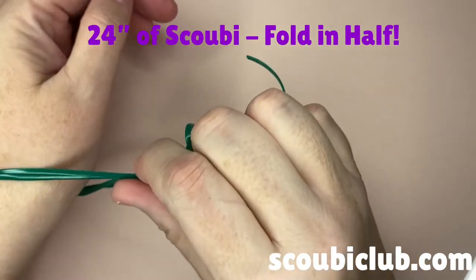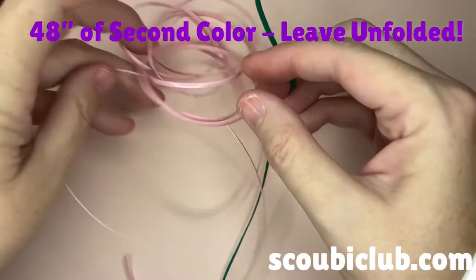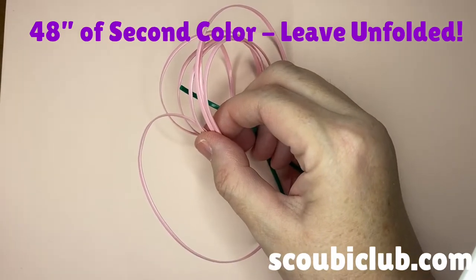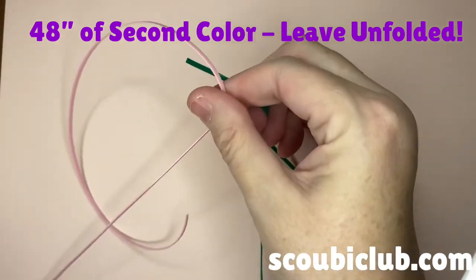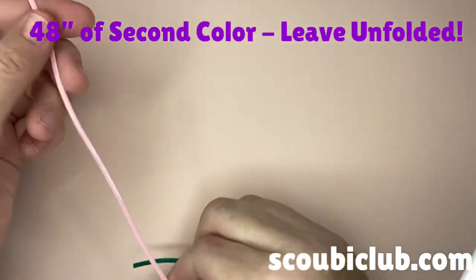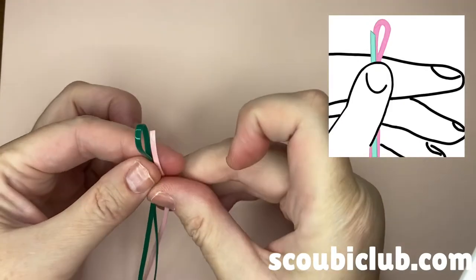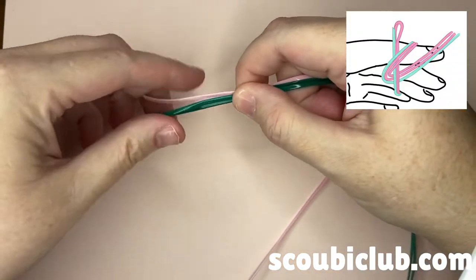If you're unsure of the size, you can wrap it around the wrist and you should have about four inches left over. In your second color, you'll need about 48 inches of Scoubi, so you should fold the first one in half to make a loop and then line up just one end of your long strand with the loop.